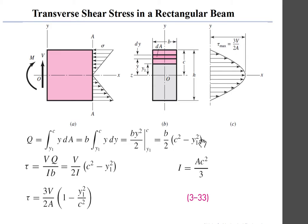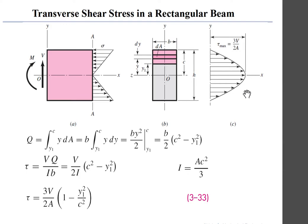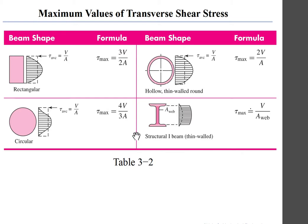Substituting back, the shear stress depends on y₁ squared — it is parabolic. When y₁ = c, shear equals zero; when y₁ = 0, shear is maximum. So the shear distribution is a parabola, maximum at the center. For a rectangle, the maximum shear stress is 3V/(2A), which is 1.5 times the average shear V/A. We can extend this to different shapes using tabulated results.